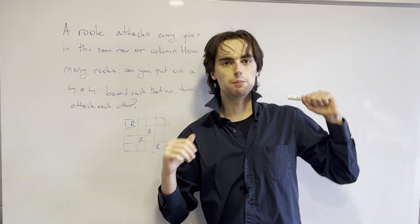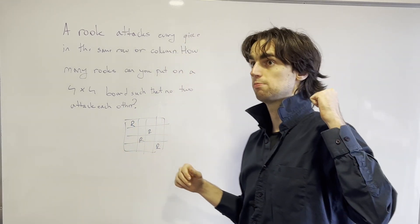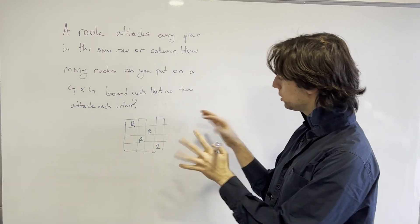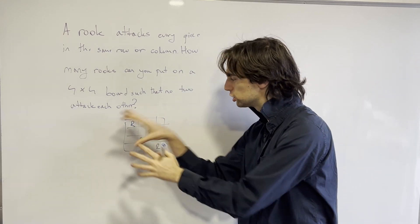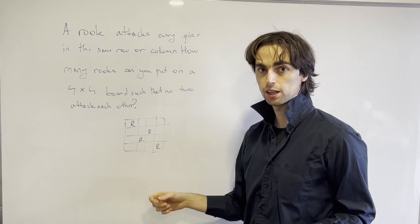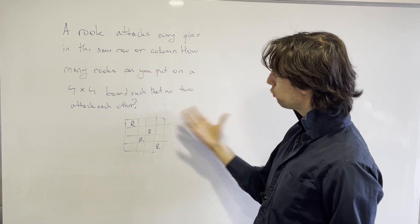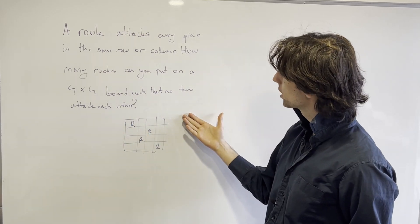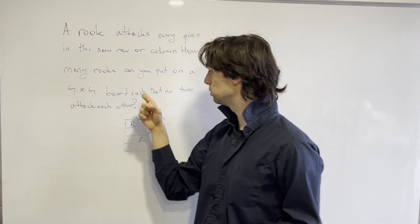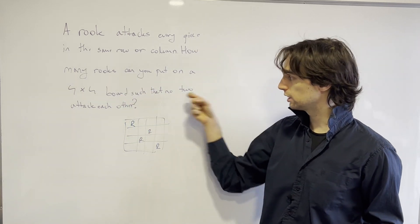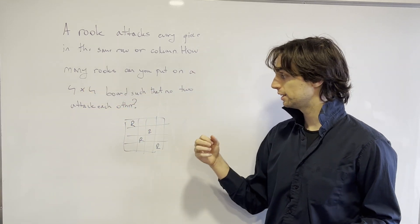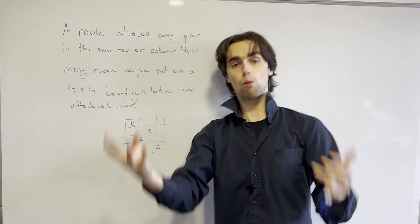You can say, oh, I can put four. Then you might say four is the maximum. But why? What have you done by constructing this? By showing you can put four, you have shown that the answer to how many rooks you can place such that no two attack each other on a four-by-four board is at least four.